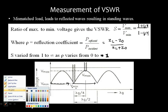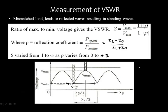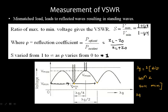To find the guide wavelength, the distance between two successive minimas equals half the guide wavelength. Therefore, the guide wavelength lambda g equals two times the distance between two successive minimas. Similarly, lambda g equals two times the distance between two successive maximas.